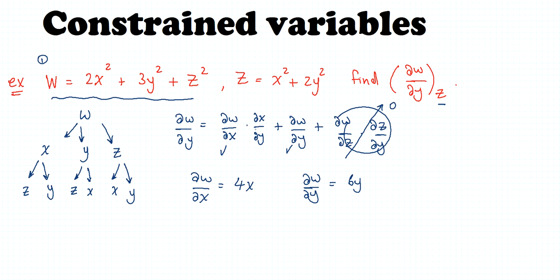Now we need to find the value of dx/dy - how does x change as we change the value of y? Taking this equation, let's call it equation two. We know that z equals x squared plus 2y squared, and z is a constant.